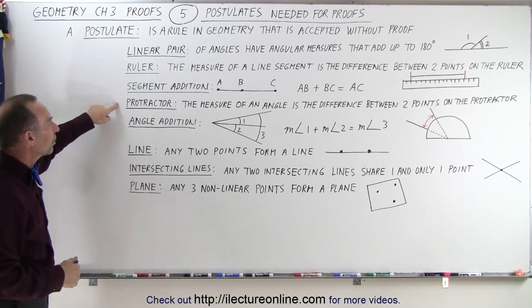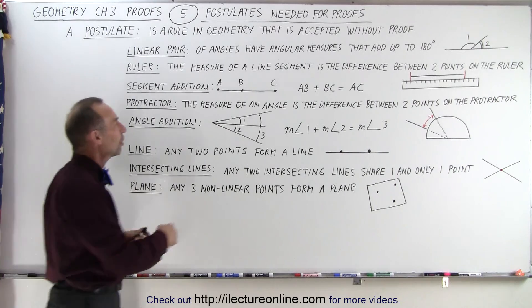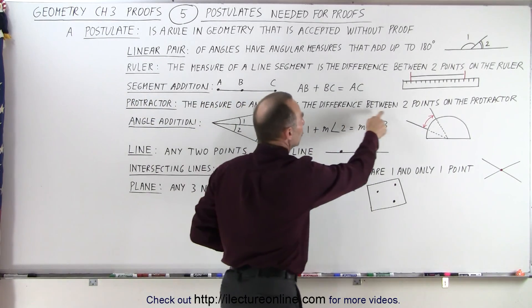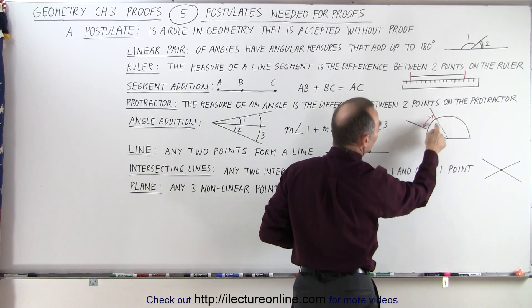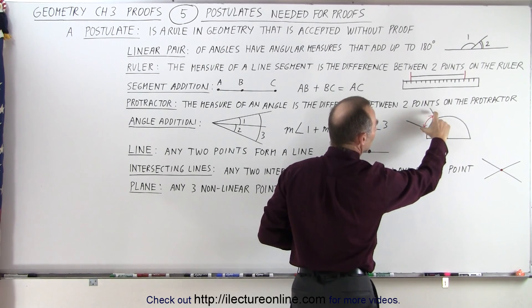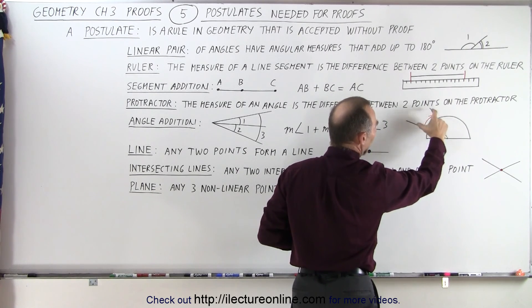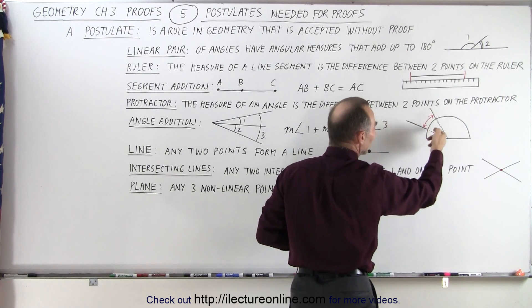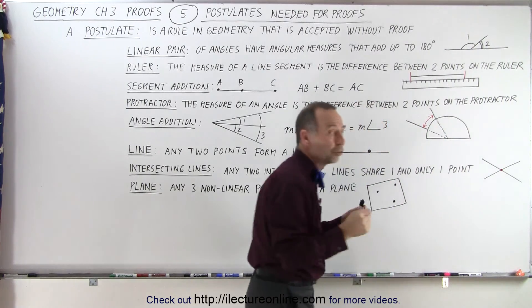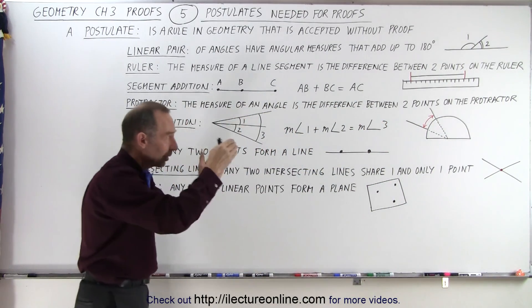The protractor postulate tells us that the measure of an angle is the difference between two points on the protractor. So see that there's one point on the protractor, there's the other, the angle measure between those two lines forming that angle equals the difference between the two numbers on that protractor where the lines cross.